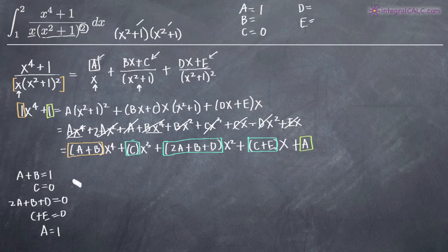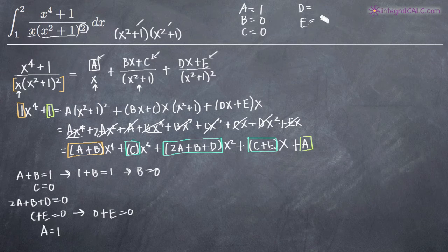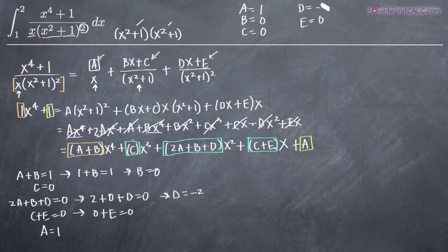Plugging a equals 1 into a plus b equals 1 gives b equals 0. We find e by plugging c equals 0 into c plus e equals 0, giving e equals 0. To find d, we plug a equals 1 and b equals 0 into 2a plus b plus d equals 0: two plus zero plus d equals zero, so d equals negative two. Those are our constants: a equals 1, b equals 0, c equals 0, d equals negative 2, e equals 0.